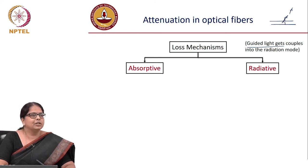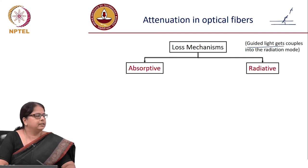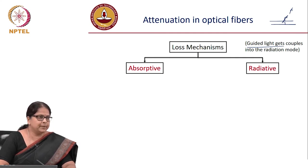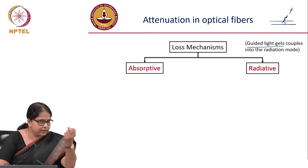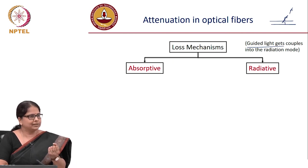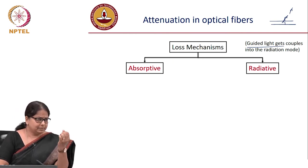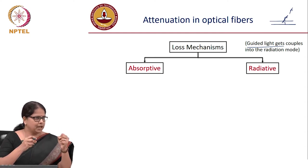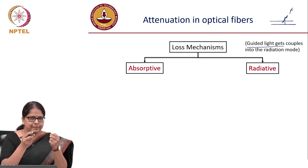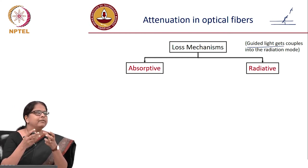In a glass fiber, the dopants can cause some absorption, but in most cases dopants are transparent so intrinsic dopant absorption is very limited. More importantly, we need to consider silica absorption first. SiO2 is a molecule with one silicon atom and two oxygen atoms bonded together, and each of these chemical bonds has resonant frequencies.